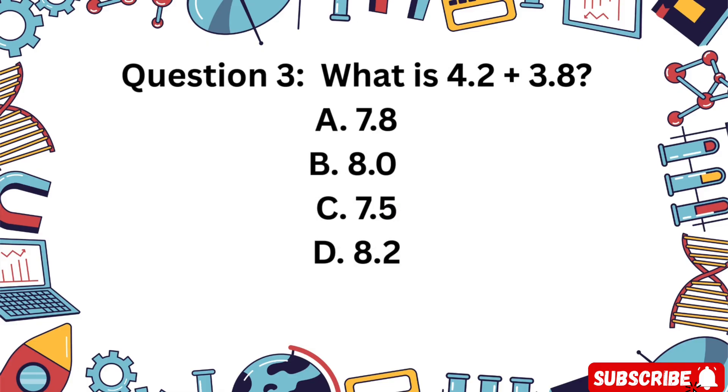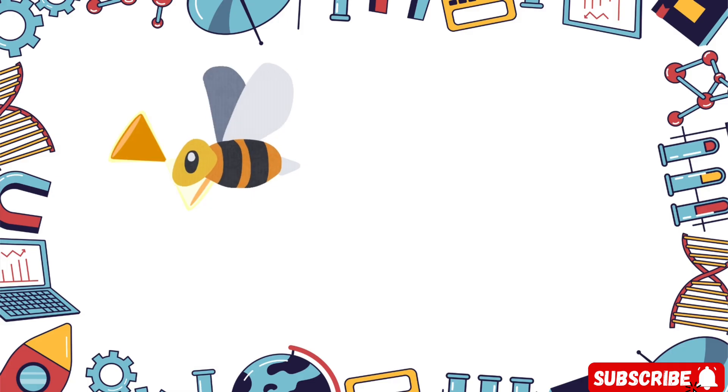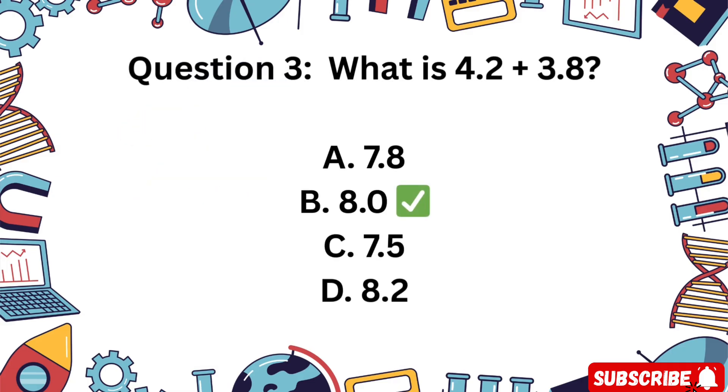Question 3: What is 4.2 plus 3.8? Is it A 7.8, B 8.0, C 7.5, or D 8.2? Awesome. 4.2 plus 3.8 equals 8.0.